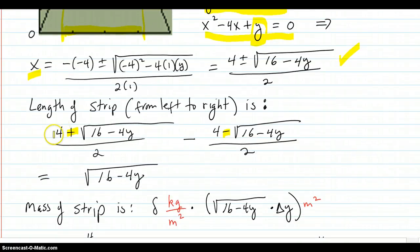When you do that, 4 over 2 cancels out with 4 over 2. And square root of this square root over 2 adds up with this square root over 2. And you get one full square root.